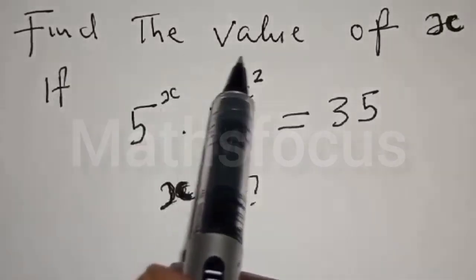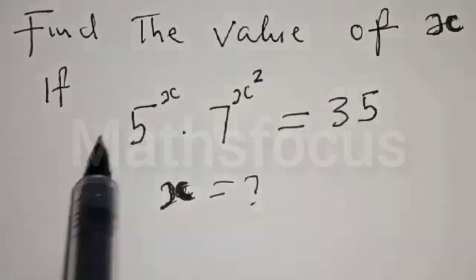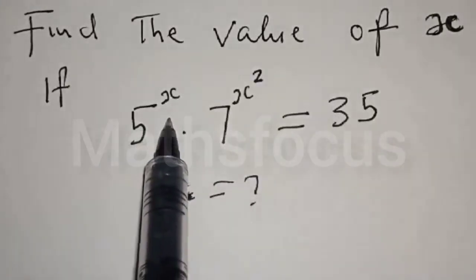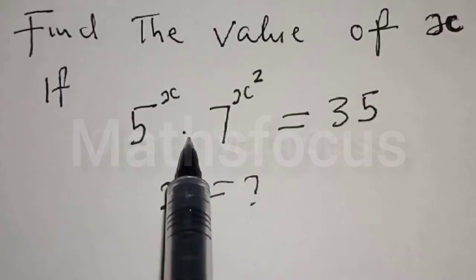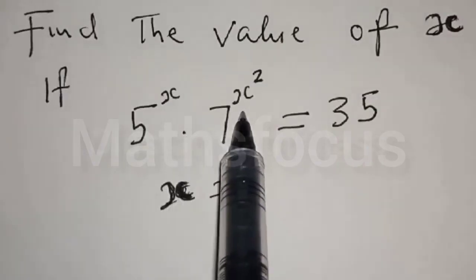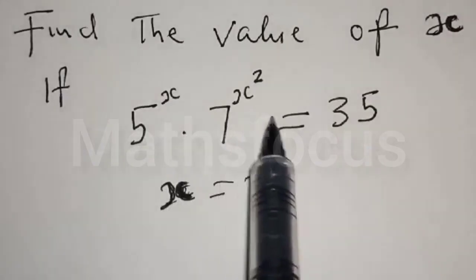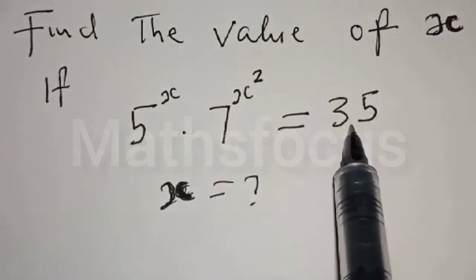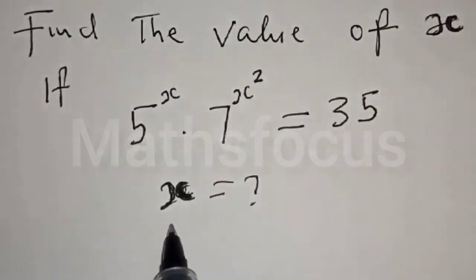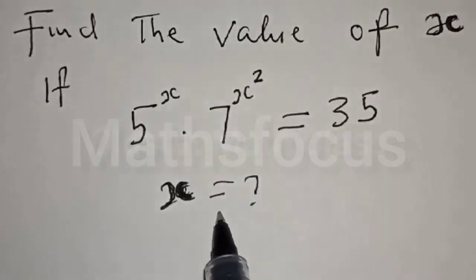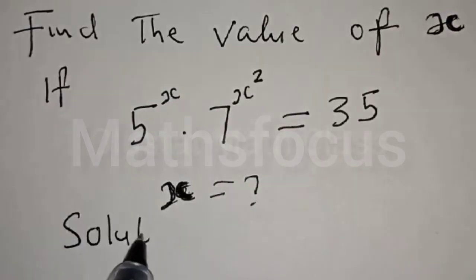Find the value of x if 5 raised to power x multiplied by 7 raised to power x squared is equal to 35. What is the value of x?